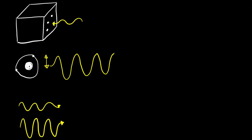But what happens when we send in radiation which has a higher frequency? If we send in ultraviolet radiation and it hits the metal, it turns out that only a little bit of ultraviolet radiation is enough to liberate the electrons. It doesn't matter what the intensity is — even a really small amount of ultraviolet radiation is still enough to kick the electrons out, whereas a large amount of ordinary visible light, which doesn't have a high frequency, is not enough to kick the electrons out.